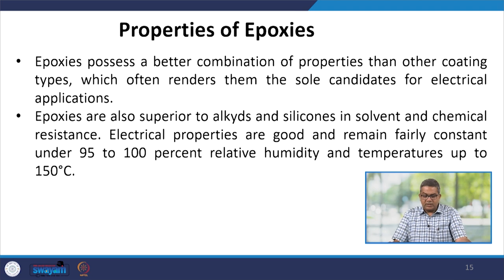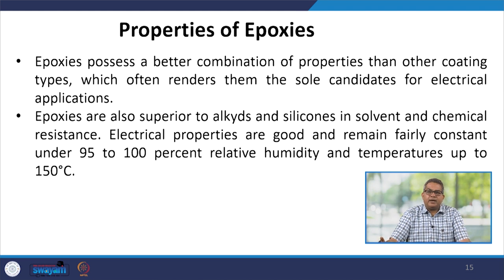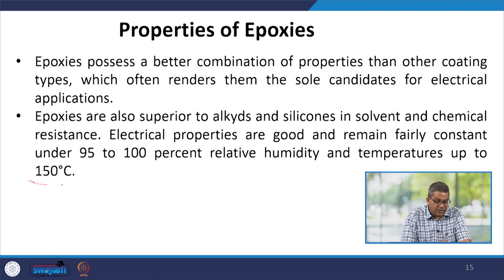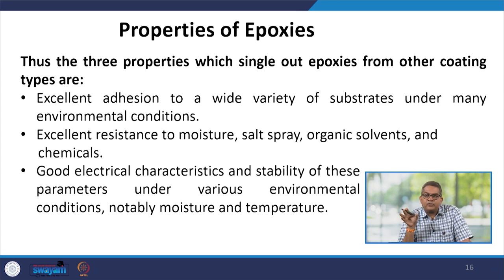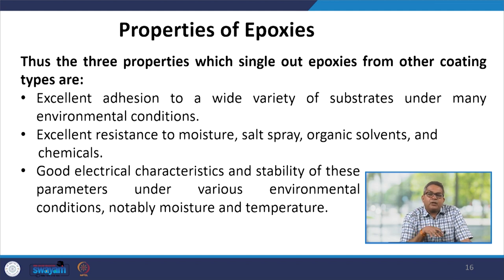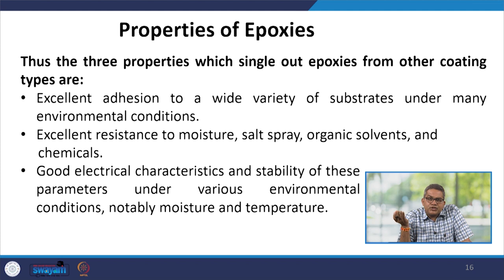Let us talk about the properties of epoxies. Epoxies possess a better combination of properties than other coating types, which often renders them the sole candidates for electrical applications. Epoxies are also superior to alkydes and silicones in solvent and chemical resistance. Electrical properties are good and remain fairly constant under 95 to 100% relative humidity and temperatures up to 150°C. Three properties single out epoxies: excellent adhesion to a wide variety of substrates, excellent resistance to moisture, salt spray, organic solvents and chemicals, and good electrical characteristics stable under various environmental conditions.